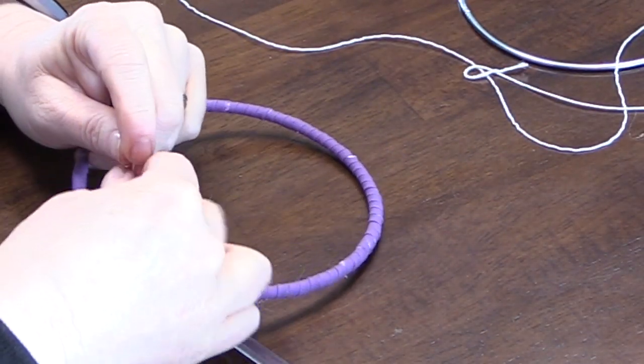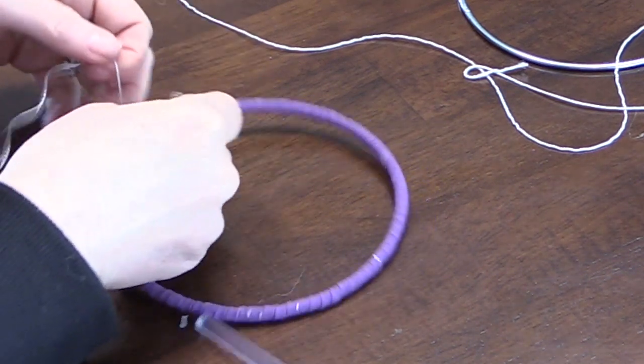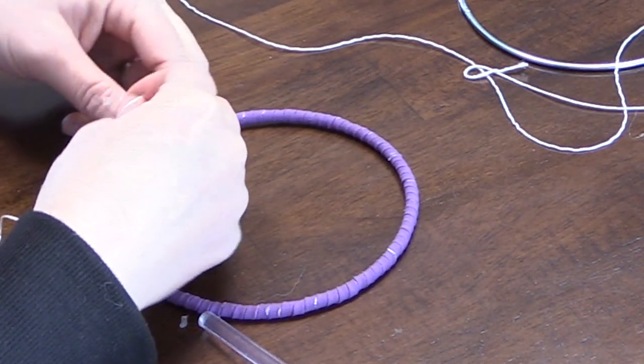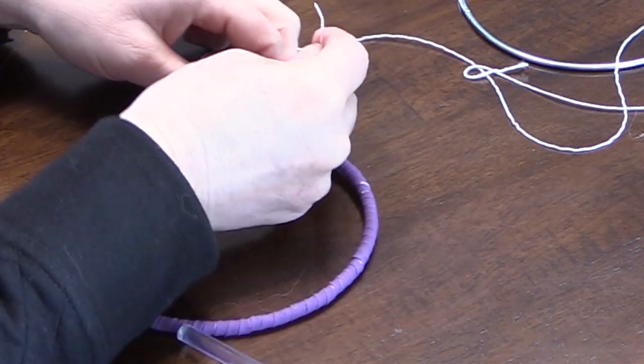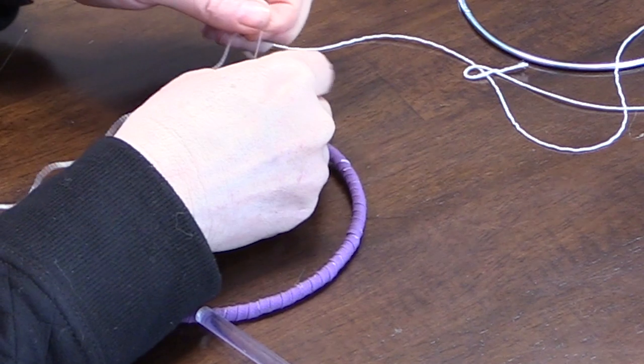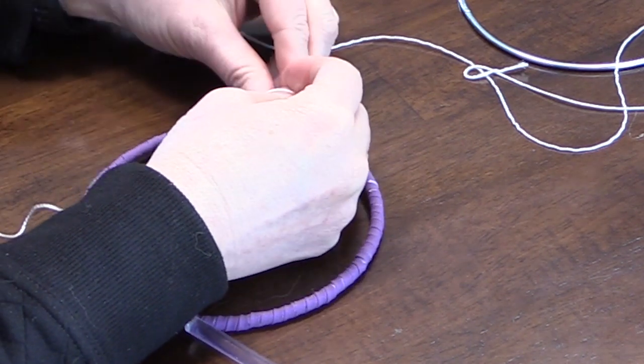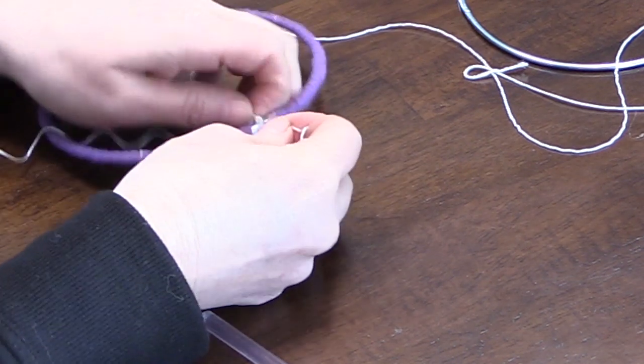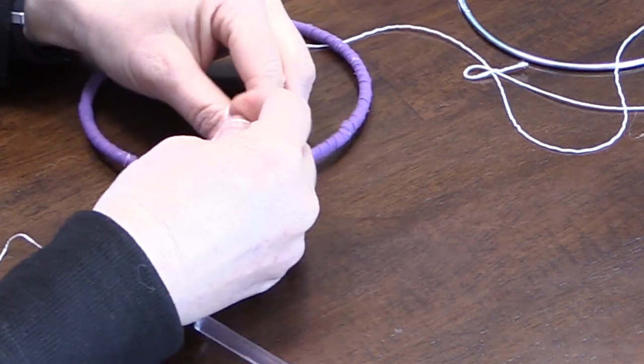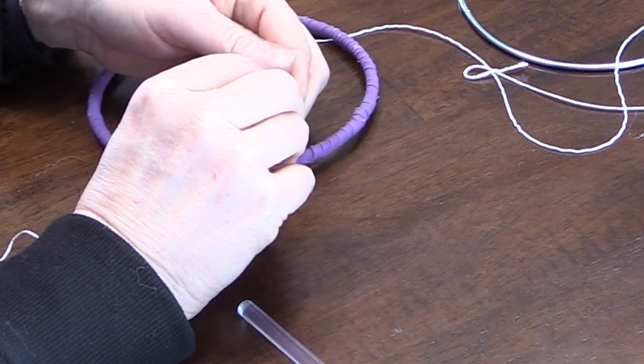All I did was take this white string that came from inside the paracord and I tied a long piece to the ring itself. This is gonna be the starting of my dream catcher, or like the web portion of the dream catcher. And then you just wrap that white string—you can use wax cord too—you just wrap it around the ring.